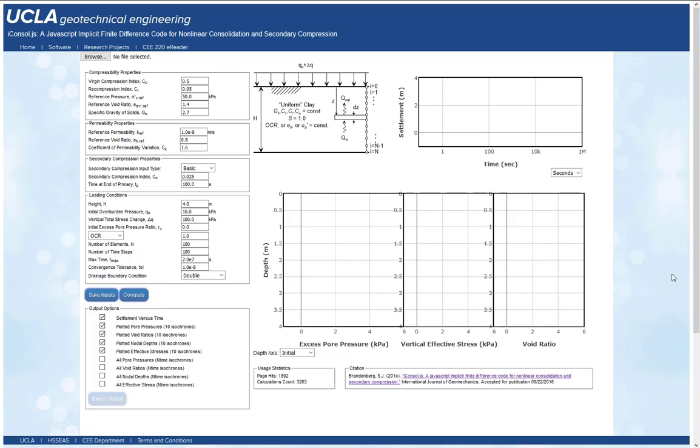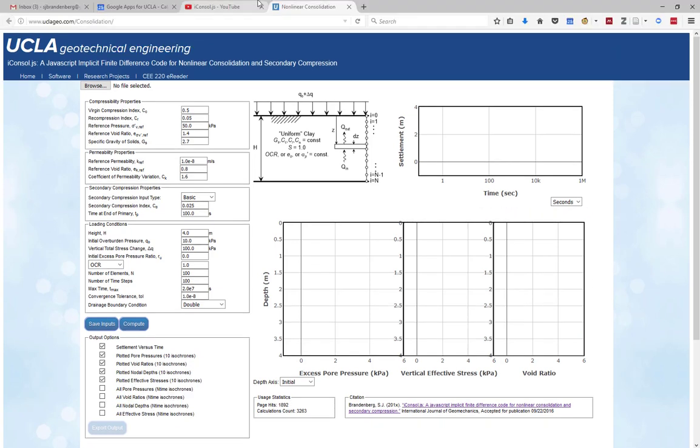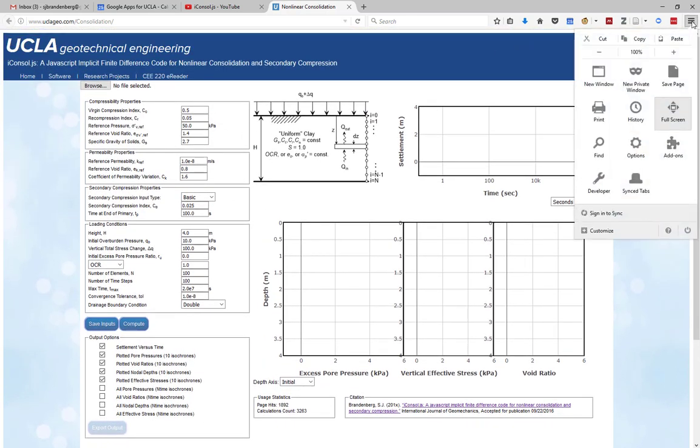This video is going to go through a nonlinear consolidation code that I developed and made available online at the UCLA GEO website. First, the URL is uclageo.com/consolidation. If you go to that website you will come to this page right here.